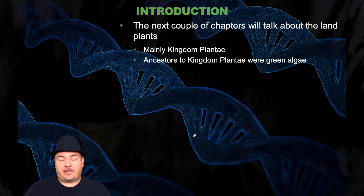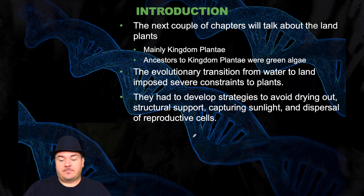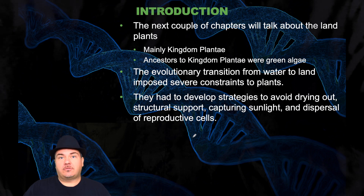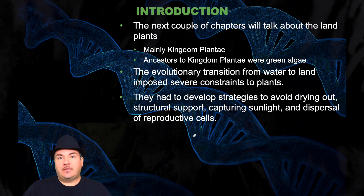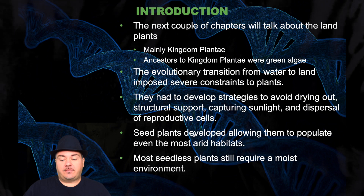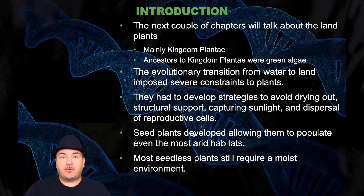We're going to talk about what we classify as land plants, which are eukaryotes in kingdom Plantae. The ancestors to the land plants were the green algae. The evolutionary transition from water to land imposed several constraints on land plants: they had to develop strategies to avoid drying out, get structural support to overcome gravity, capture sunlight energy, and disperse their reproductive cells. Seed plants then developed, allowing them to populate even the most dry environments, while most seedless plants require a moist environment.